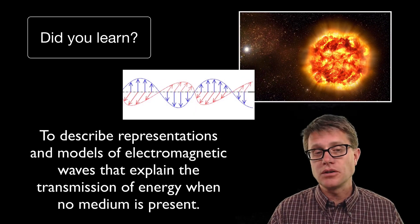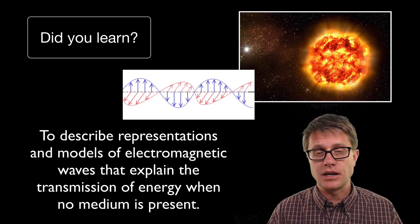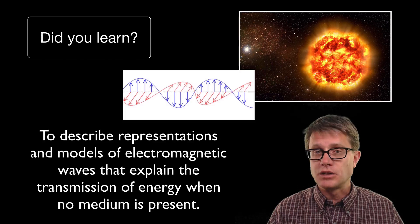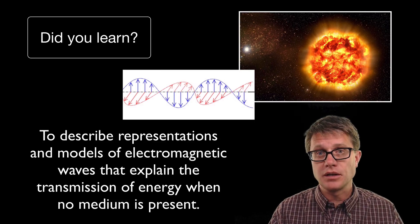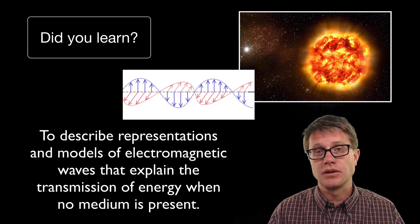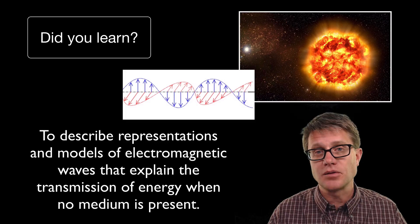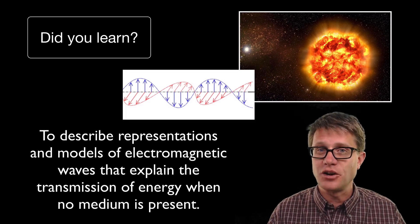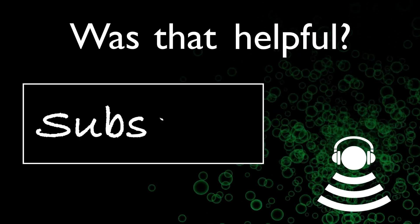Did you learn to describe the model of an electromagnetic wave? It is both a transverse wave — perpendicular electric field and magnetic field — and it can move through the vacuum of space. I hope that was helpful. Thanks for listening.